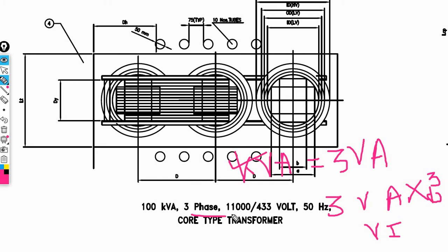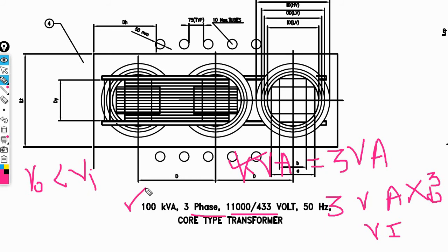This is a step-down transformer — that is, output voltage is less than input voltage. This type of transformer is called a step-down transformer, and this is an example of a three-phase core-type step-down transformer.